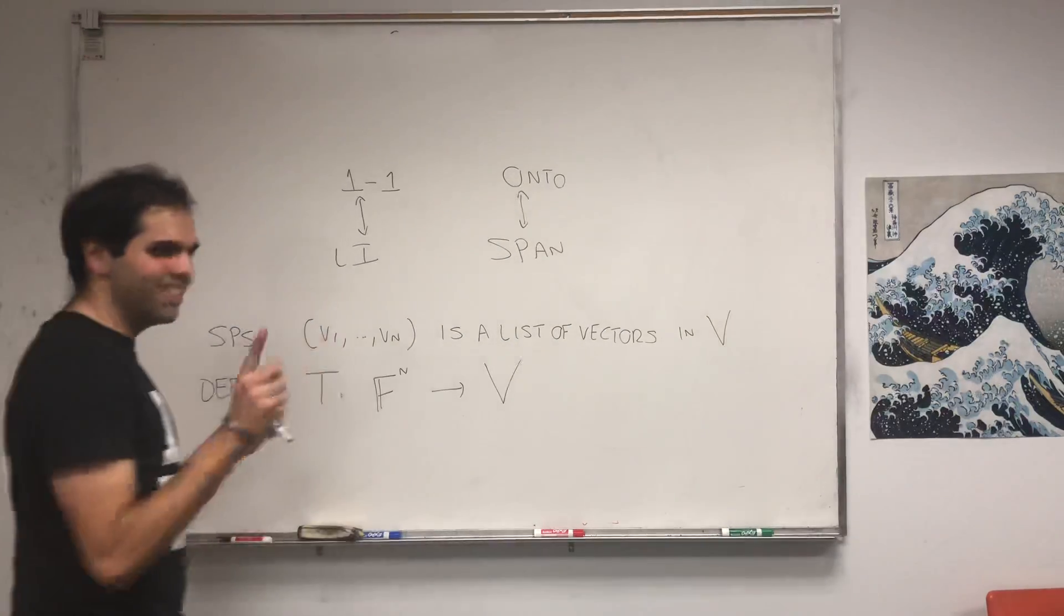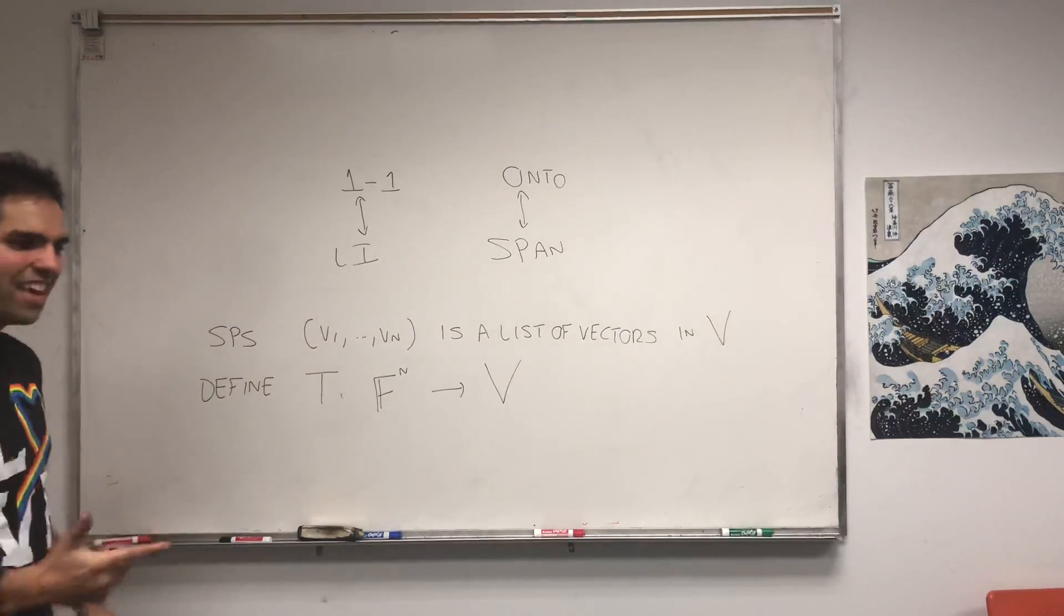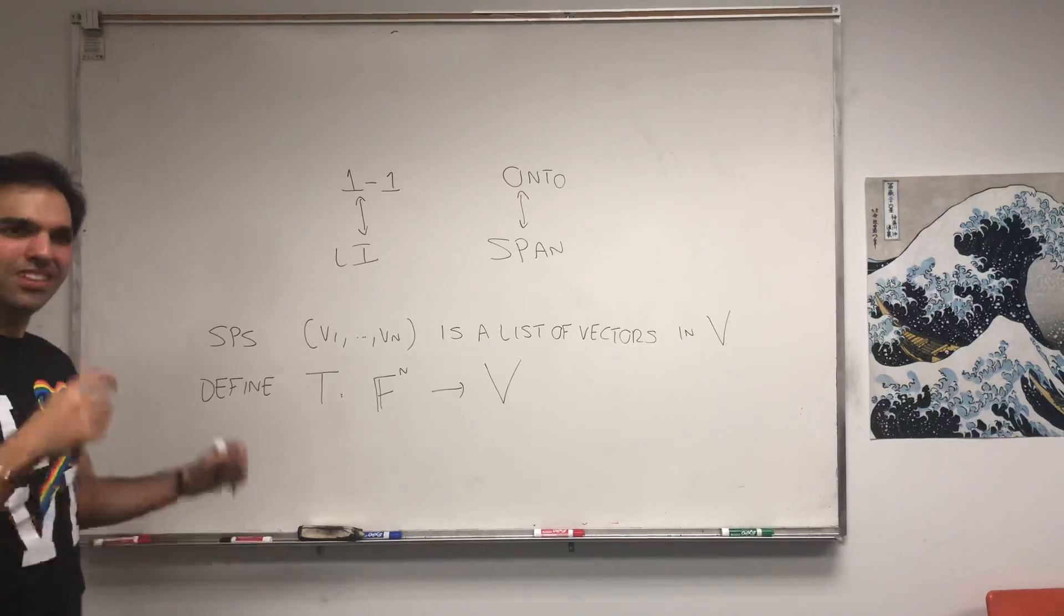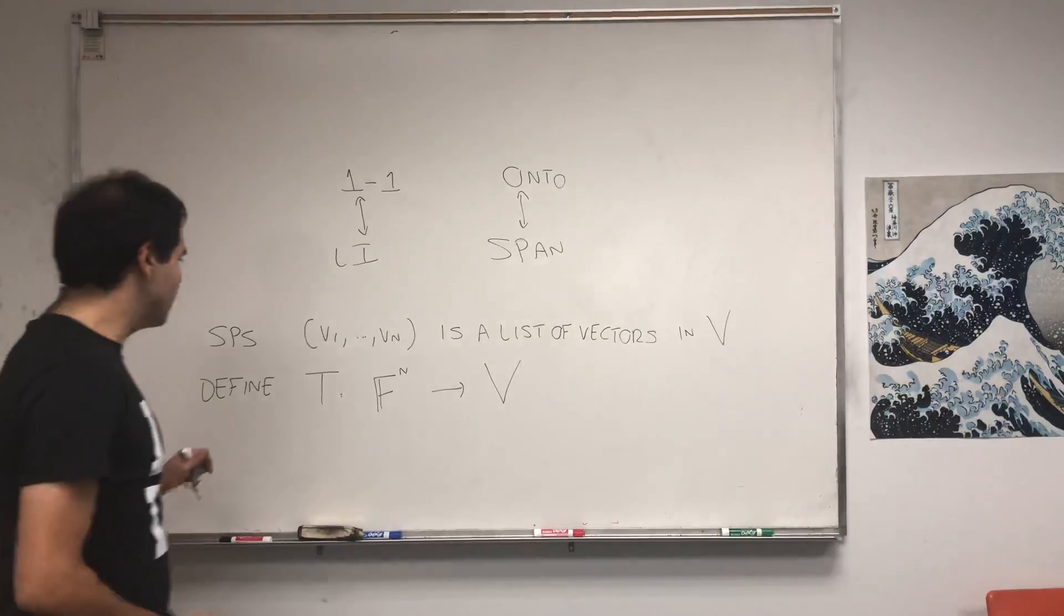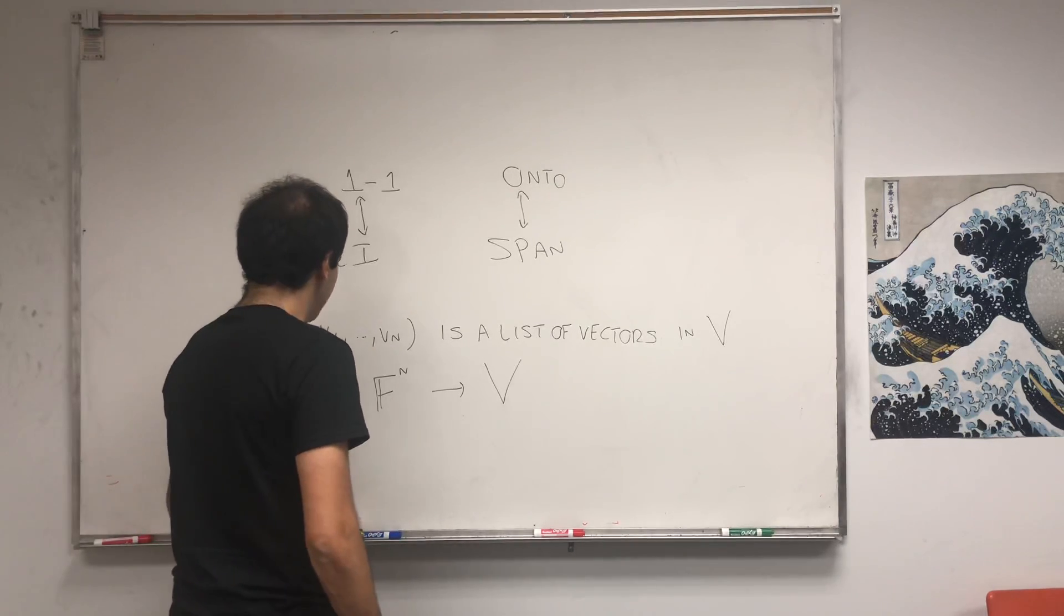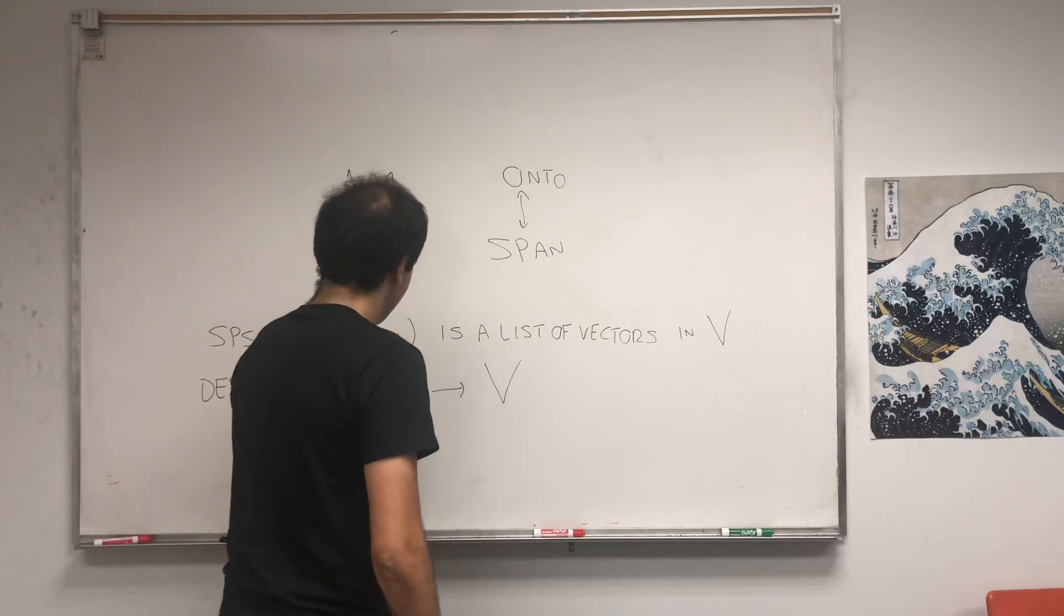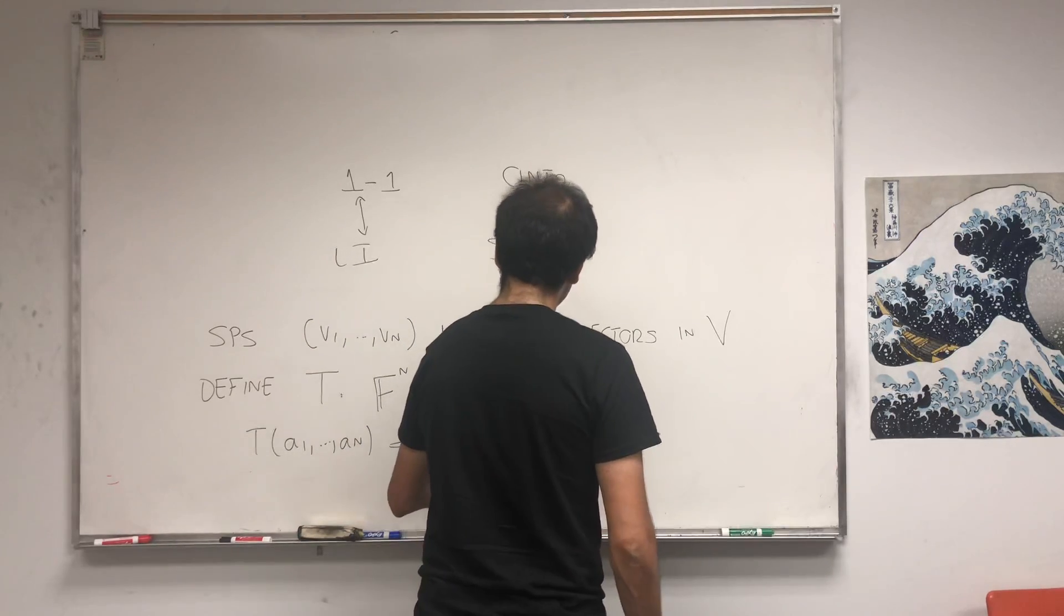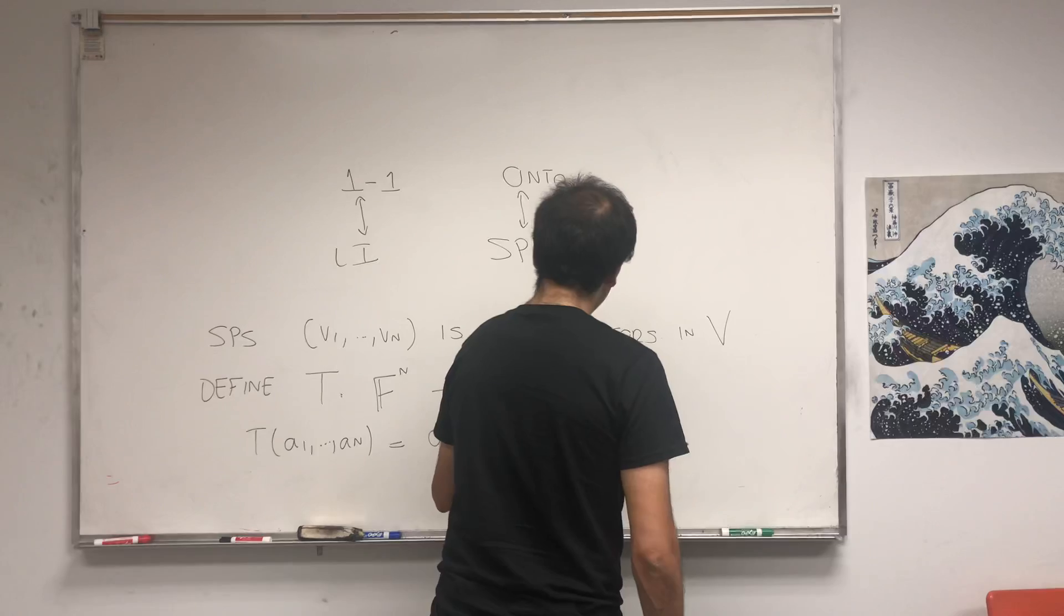And it's really cool. Usually, you take vectors and you have linear combinations. Here, you do the opposite. I give you scalars, and you do linear combinations. Namely, t of a1 up to an equals a1 v1 plus dot dot dot plus an vn.